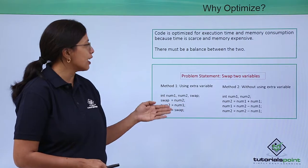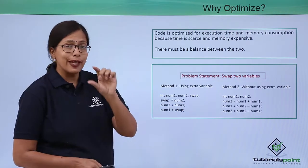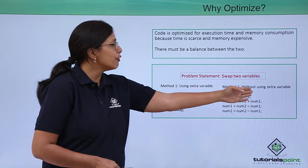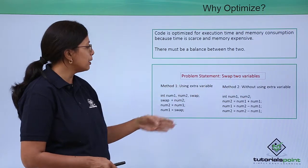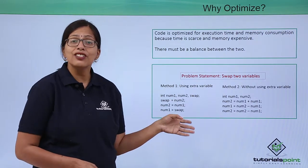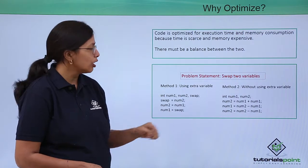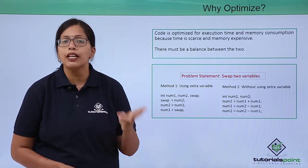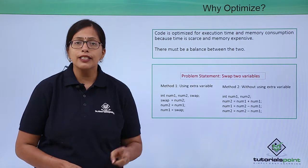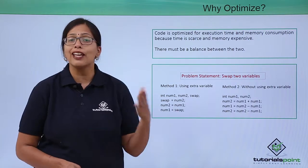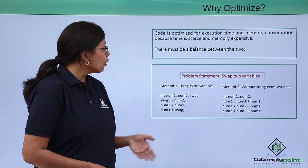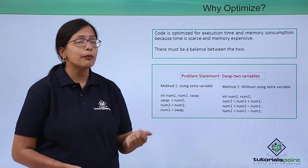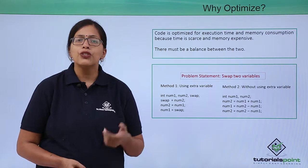Let's take a small example: a segment of program to swap two variables. This swapping can be done using an extra variable or without using one. If you use the extra variable, you have num1, num2, and swap — three variables in use. If you are not using an extra variable, only num1 and num2 are used. Using two variables utilizes less memory space. If you have a large program and make many such optimizations, you will be able to save lots of memory.